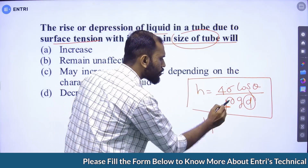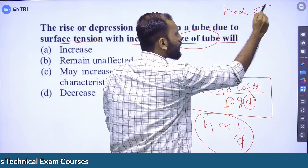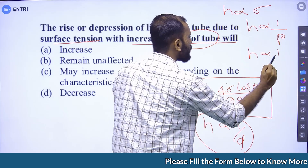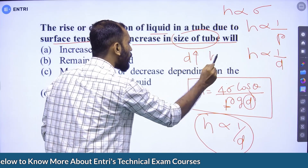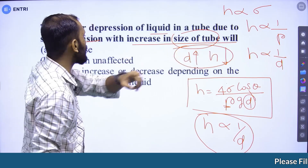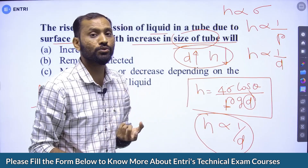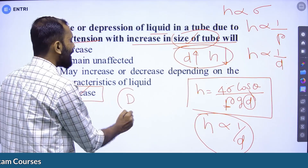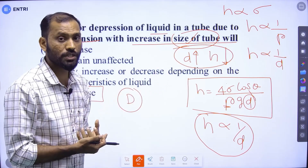From the expression, h is inversely proportional to the diameter D. So as the diameter of the tube increases, the value of h decreases. Therefore, Option D is the correct answer: capillary rise or depression decreases as the size of the tube increases. This formula should be memorized.